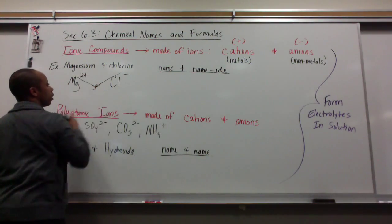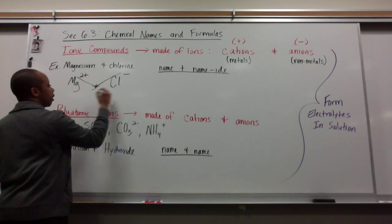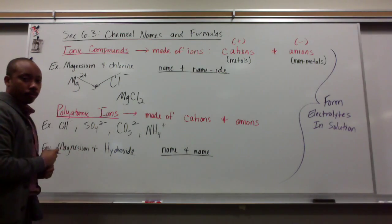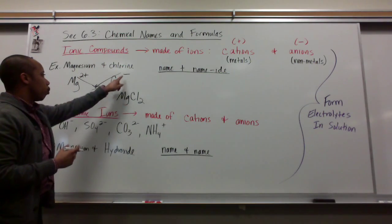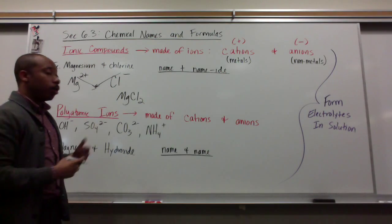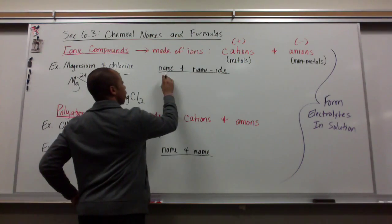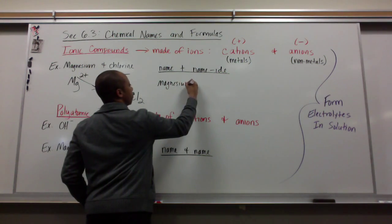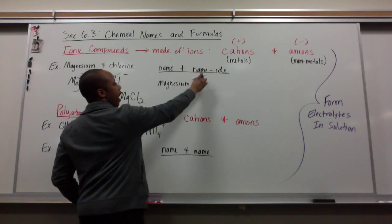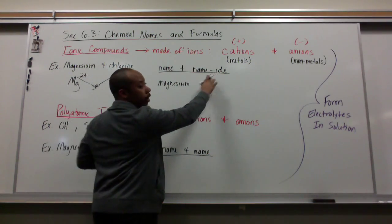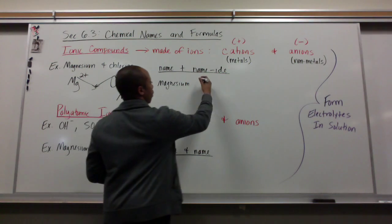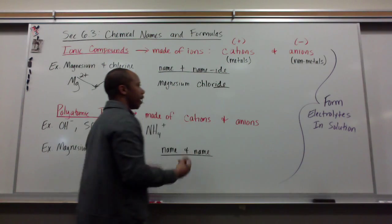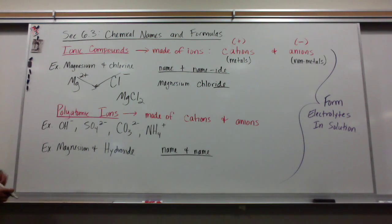Do the crossover method, and we get MgCl2. So, one goes to the Mg, two goes to Cl. We name this the first name of my cation, which is magnesium. And then we add to it the name of my second atom with an IDE ending. So, chlorine goes to chloride, magnesium chloride. That's how we would name that ionic compound.